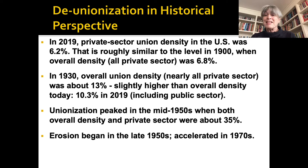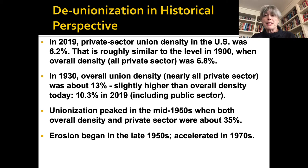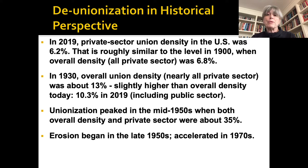Fast forwarding slightly to 1930, the period before the rise of industrial unionism and the New Deal, which is often seen as the prehistory of the modern U.S. labor movement, overall union density was about 13%. Today, overall union density — that is both public and private sector — is 10.3% as of 2019. And when you take into account that the public sector was still relatively small and mostly non-union in 1930, that's quite similar to now. We've basically gone back to conditions typical of the pre-New Deal era, including the rates of inequality itself.